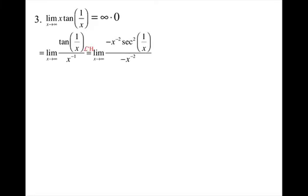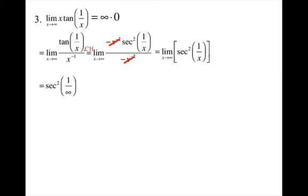For number 3, plugging in infinity gives infinity times 0. Bring the x down using negative exponents, then apply L'Hopital's Rule to the top and bottom. The x^(negative 2)'s cancel, leaving sec²(1/x). Plugging in infinity gives sec²(0), and sec(0) = 1. I hope you enjoyed learning L'Hopital's Rule.